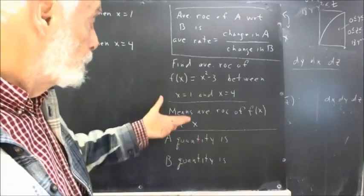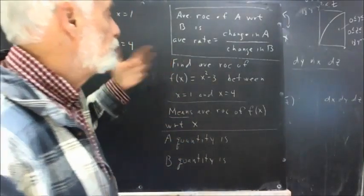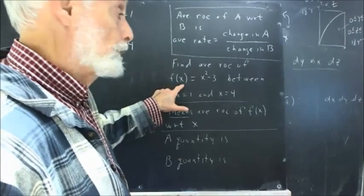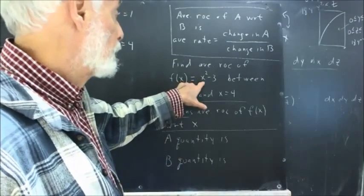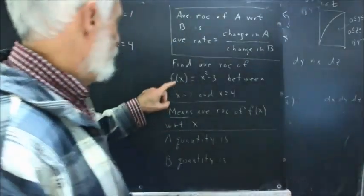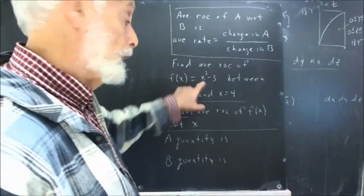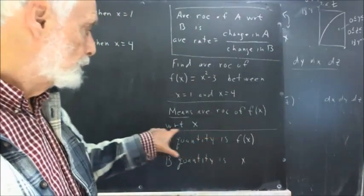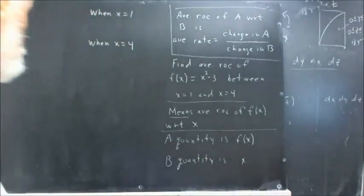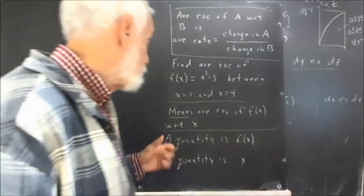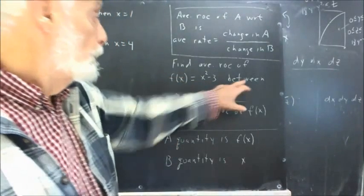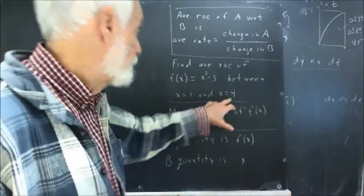So the A quantity here is F(x), since that's what comes before 'with respect to,' and the B quantity is x. If we give a function and ask for its average rate of change, we mean with respect to its variable — in this case, x. We're told this is between x = 1 and x = 4, so we know the B quantity changes accordingly, and we need to find the change in both quantities.